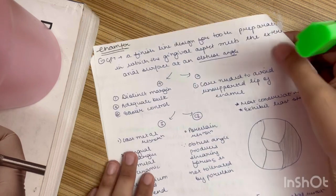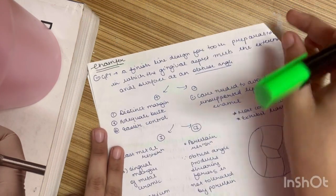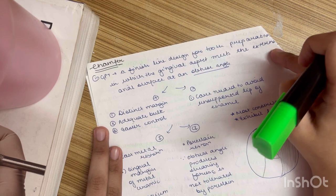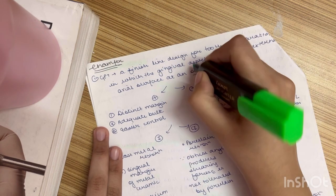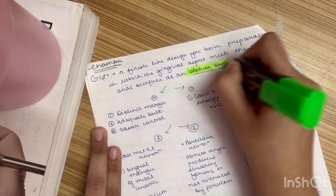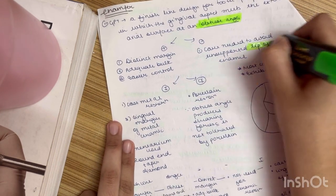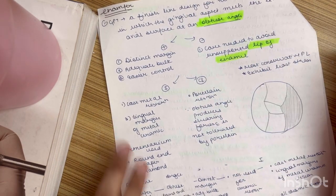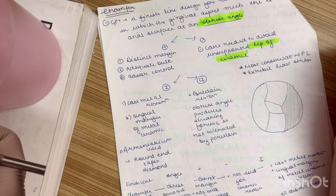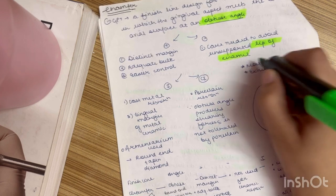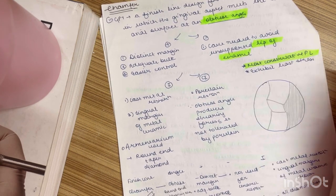Now what is chamfer exactly? According to GPT it is a finish line design for tooth preparation in which the gingival aspect meets the external axial surface at an obtuse angle. There is one thing that sometimes there is formation of lip. Now what is lip? Lip is the unsupported enamel. There are 2-3 more points that you should remember. Chamfer is the most conservative finish line.